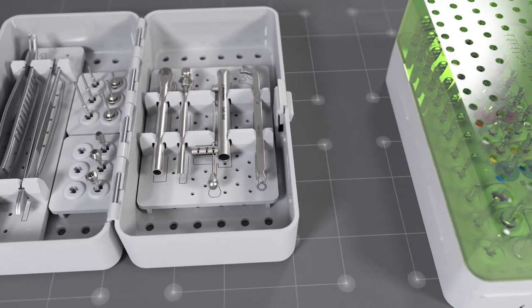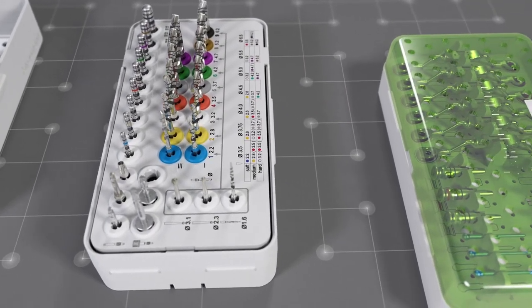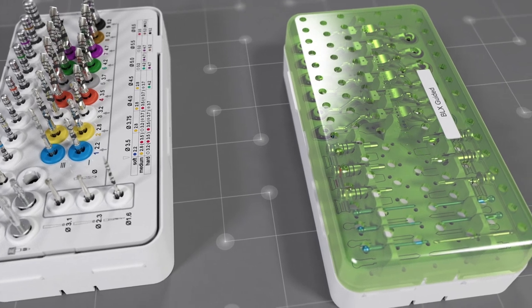In the B module, cutting instruments are stored. The A and B module build the basic instrument set for freehand implant surgery.